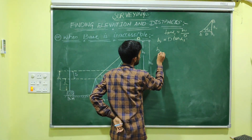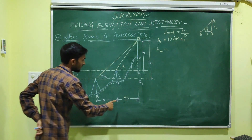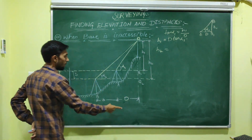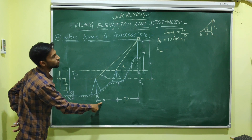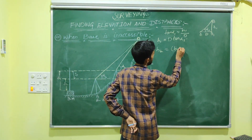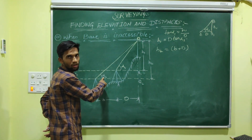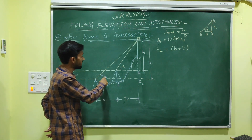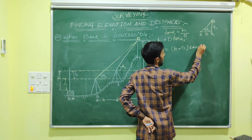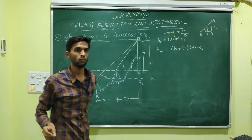Similarly, H2 — in that case the distance is D, but from station B the horizontal distance increases to small b plus D, and the angle changes to alpha 2. So tan(alpha 2) gives us H2 over (b + D), meaning H2 equals (b + D)·tan(alpha 2).